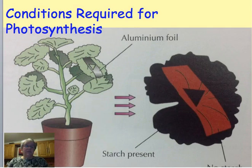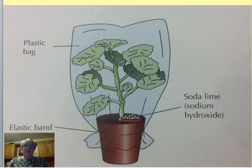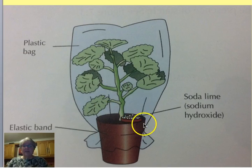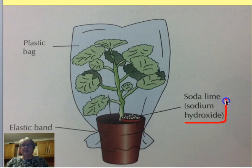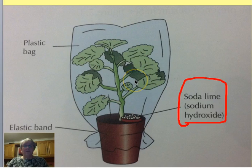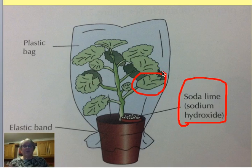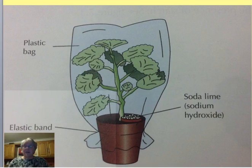A similar kind of test can be done investigating that carbon dioxide is needed for photosynthesis. In this example, you've got your plant that's been de-starched — left in the dark for 24 or 48 hours — then brought out into the light. A polythene plastic bag is put over it and secured with an elastic band, and then some substance — in this case sodium hydroxide — is placed inside, which removes all the carbon dioxide from the air. You leave it in the light, then test one of the leaves for the presence of starch. With no carbon dioxide, when you test it, you'll find there is no starch present in the leaf.